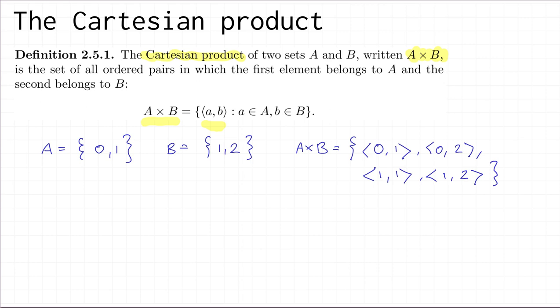And in fact, in general, you can see that the size of A × B, or the cardinality of A × B, will just be the size of A times the size of B. Since you can pick the first element in the ordered pair freely from A, then you can pick the second element freely from B.